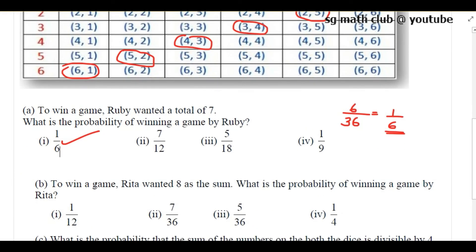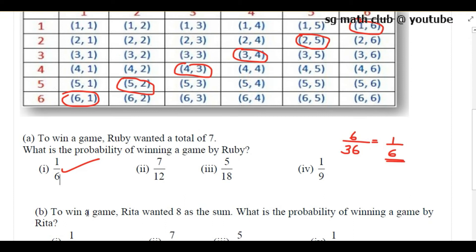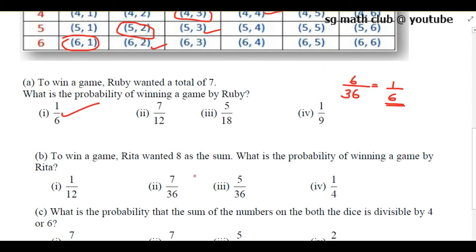Next question: to win a game, Rita wanted 8 as a sum. What is the probability of winning the game by Rita? She wants 8 as a sum. So the combinations are: 2 plus 6, 6 plus 2 — that gives 2 outcomes. Then 4 plus 4 is 8. Next, 5 plus 3 is 8 and 3 plus 5 is 8. So there are 5 favorable outcomes in total, and the answer is 5 by 36.